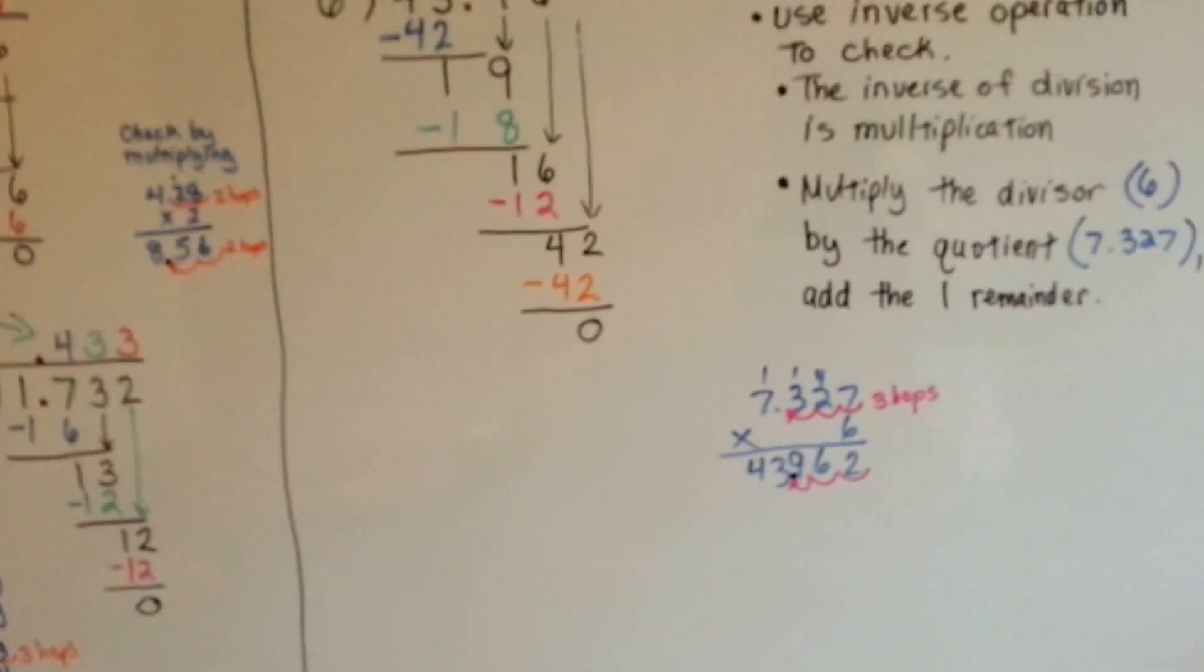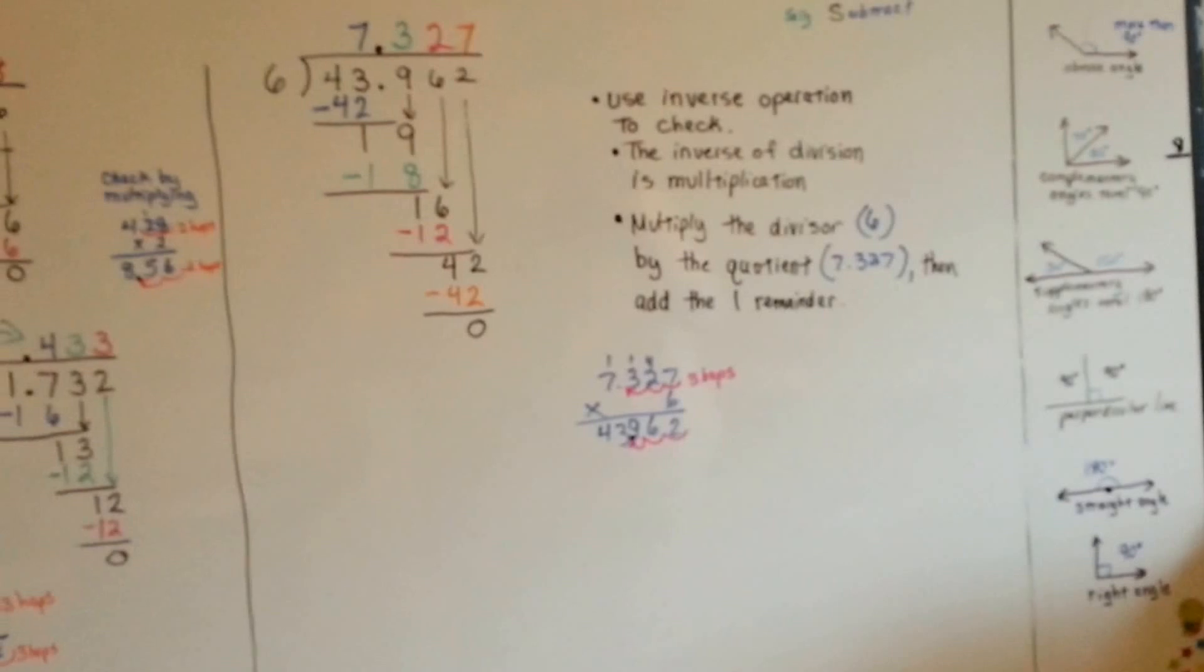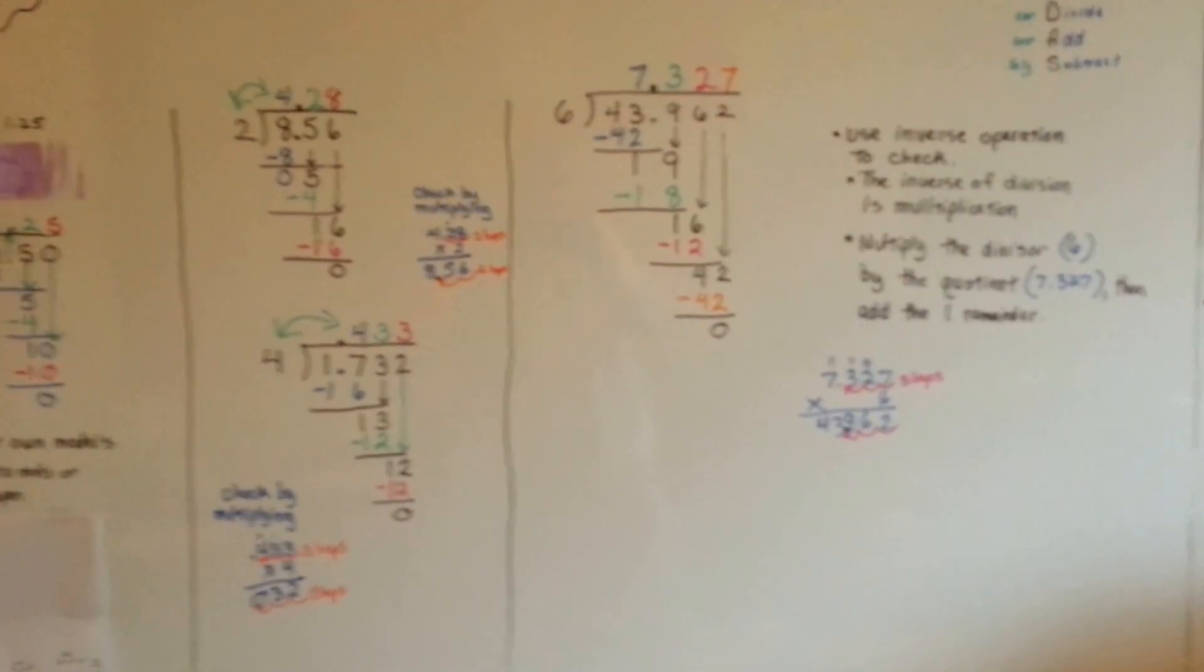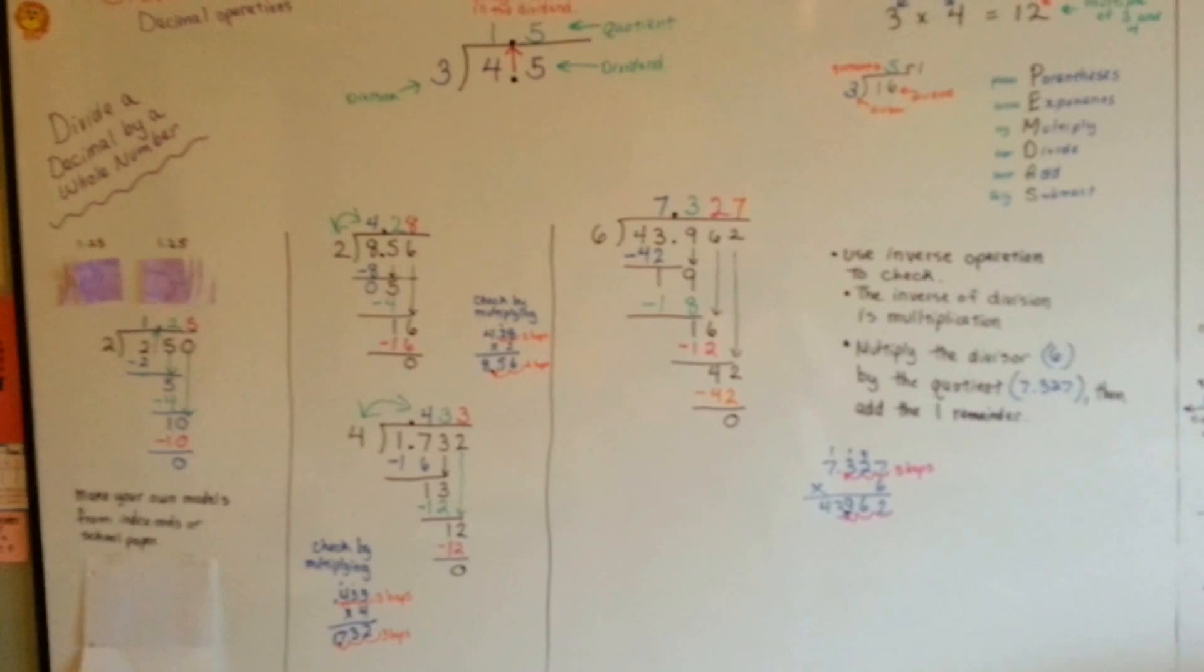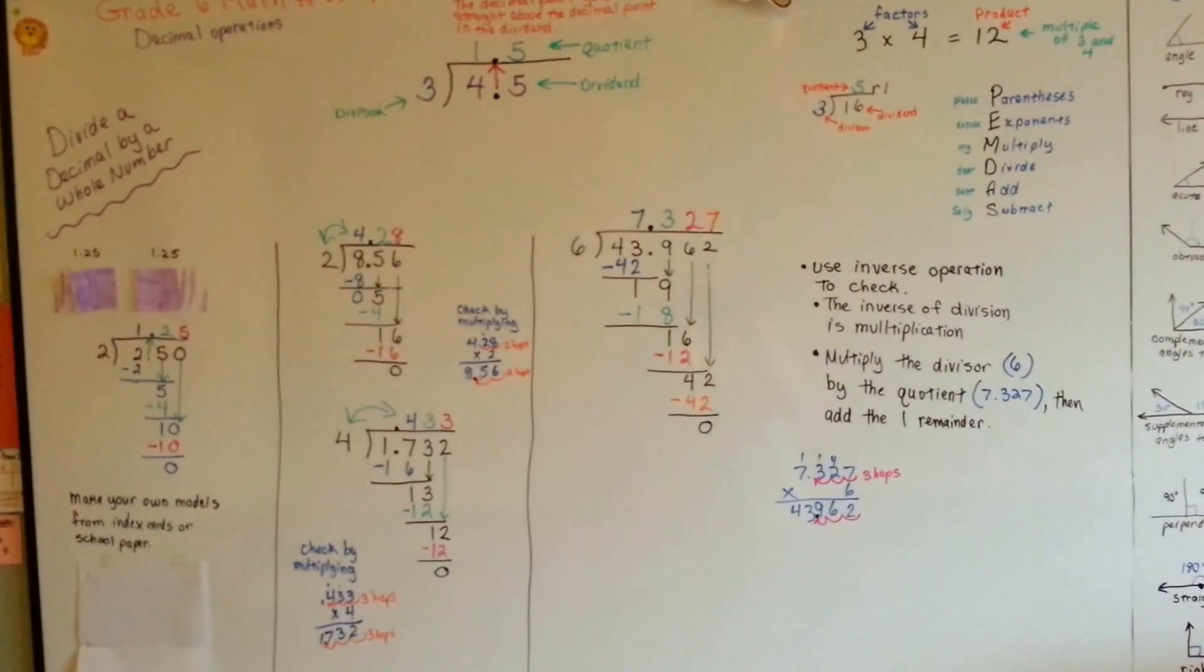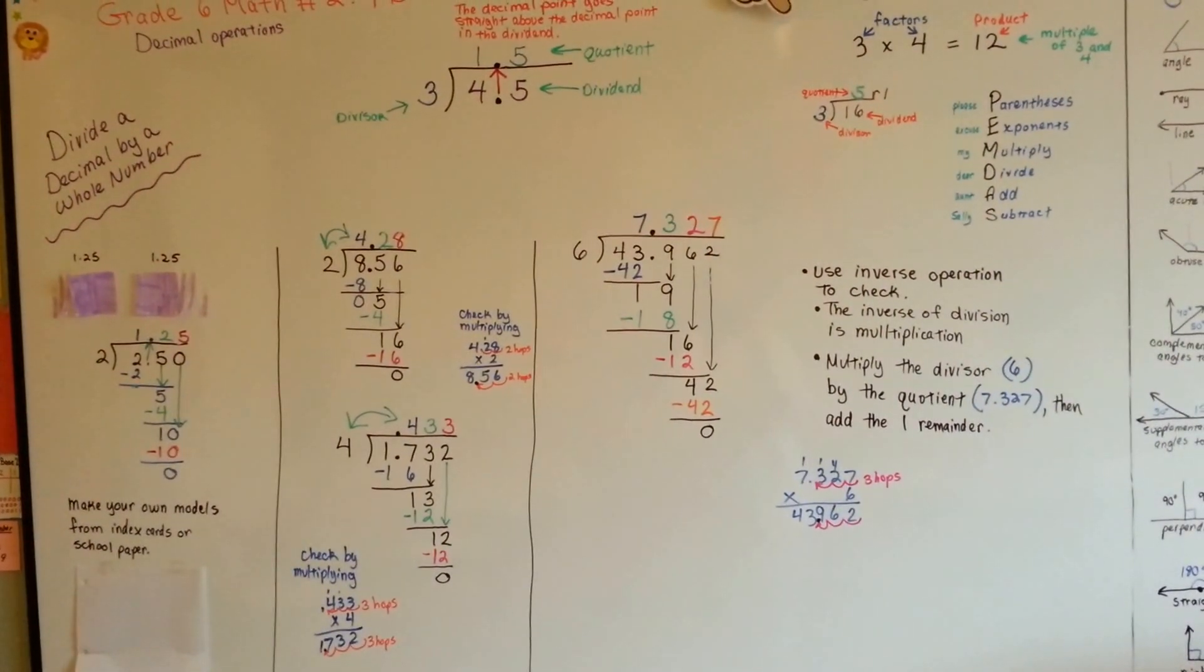It's not that hard to divide a decimal by a whole number. It's just like regular division. And it's really no big deal. You could do this. This isn't that hard. I'll see you next video. Bye.